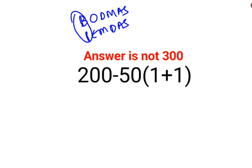So we'll keep the rest of the question as it is, and there is no sign between 50 and the bracket, means it is multiplication, and the bracket is 1 plus 1 which is 2.